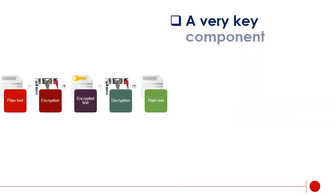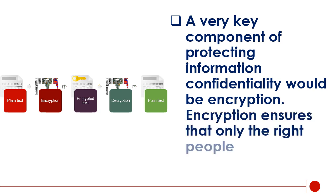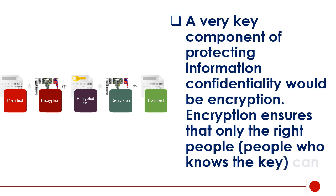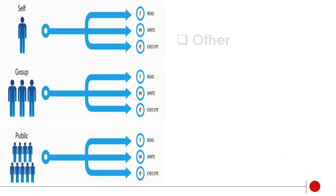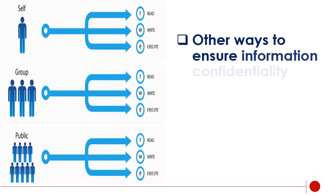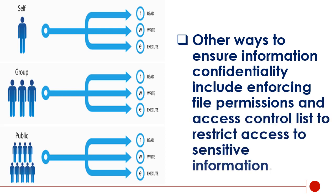A very key component of protecting information confidentiality would be encryption. Encryption ensures that only the right people — people who know the key — can read the information. Encryption is very widespread in today's environment and can be found in almost every major protocol in use. A very prominent example is SSL/TLS, a security protocol for communications over the Internet. Other ways to ensure information confidentiality include enforcing file permissions and access control lists to restrict access to sensitive information.